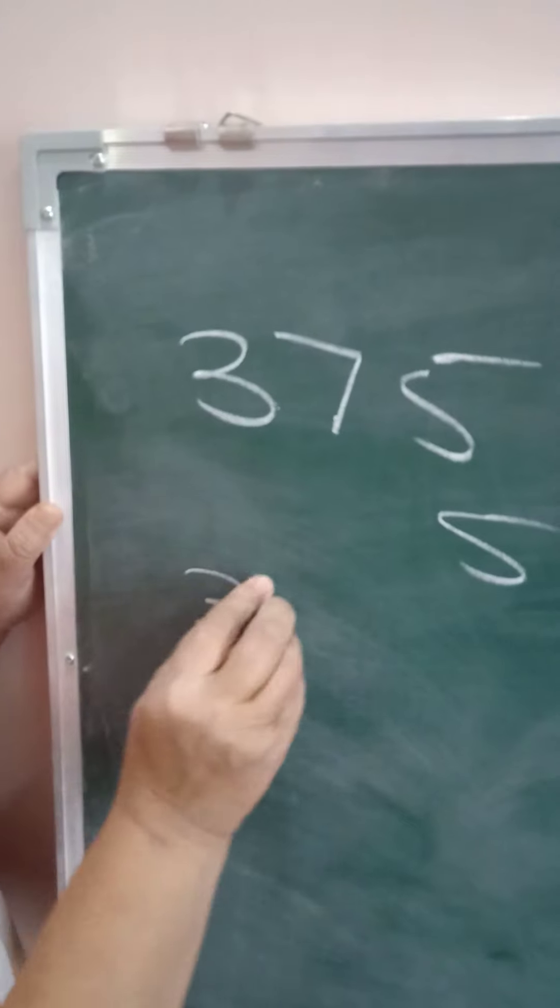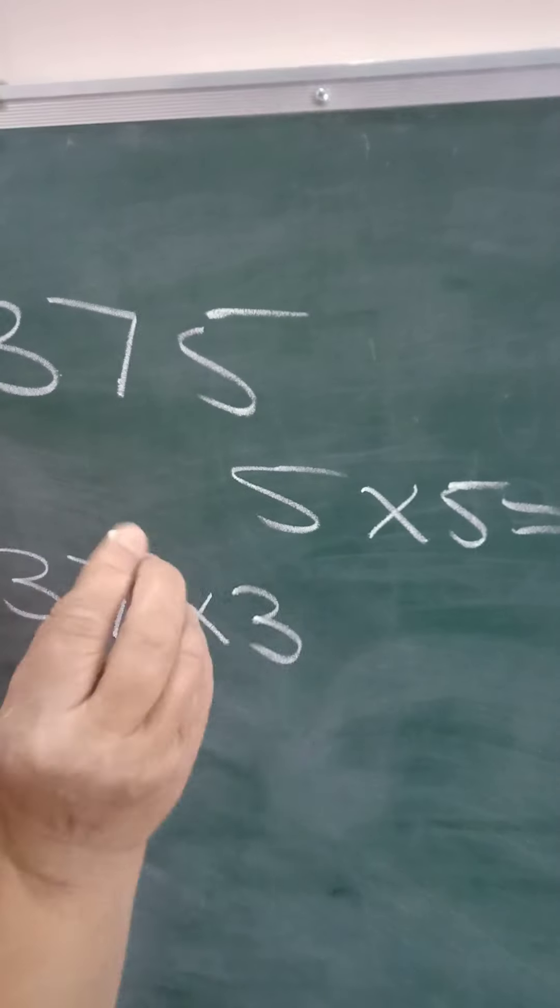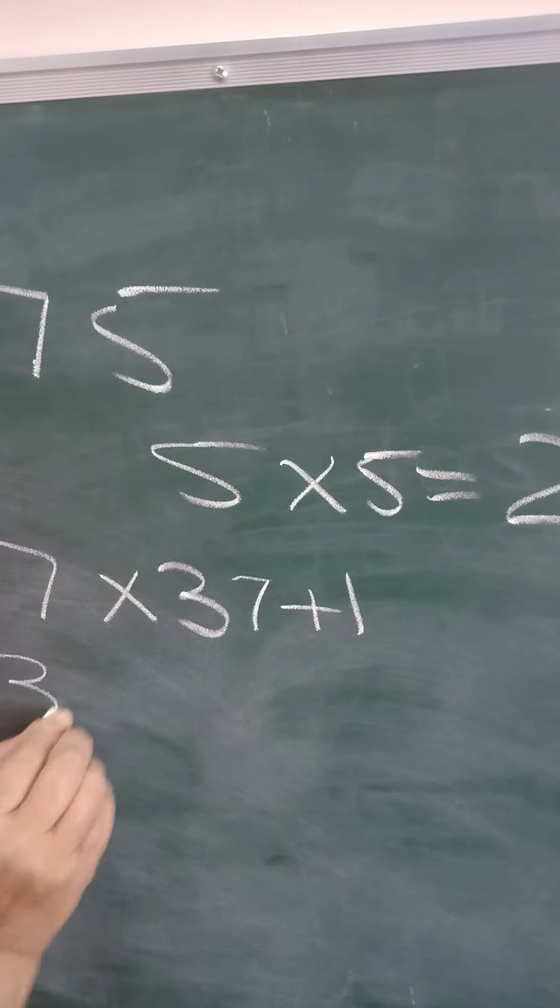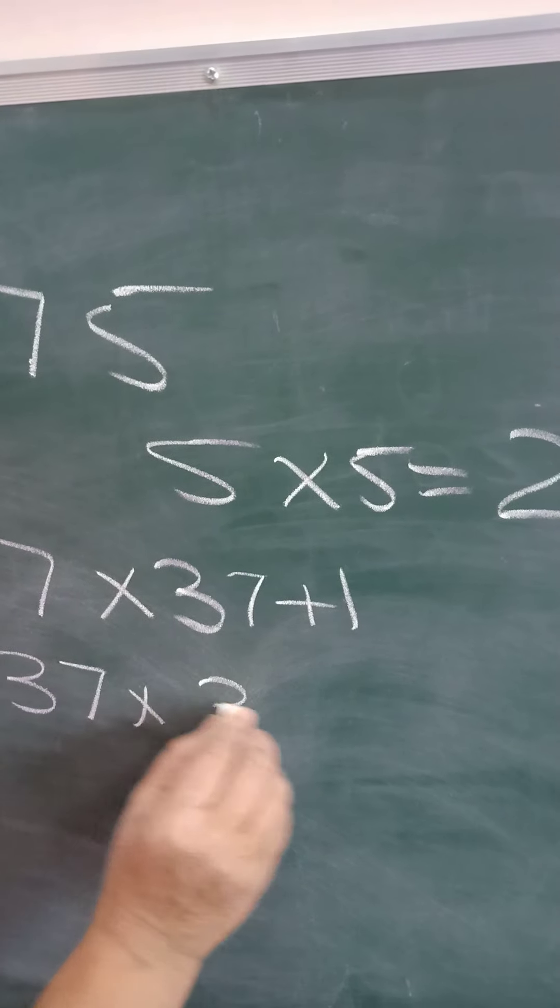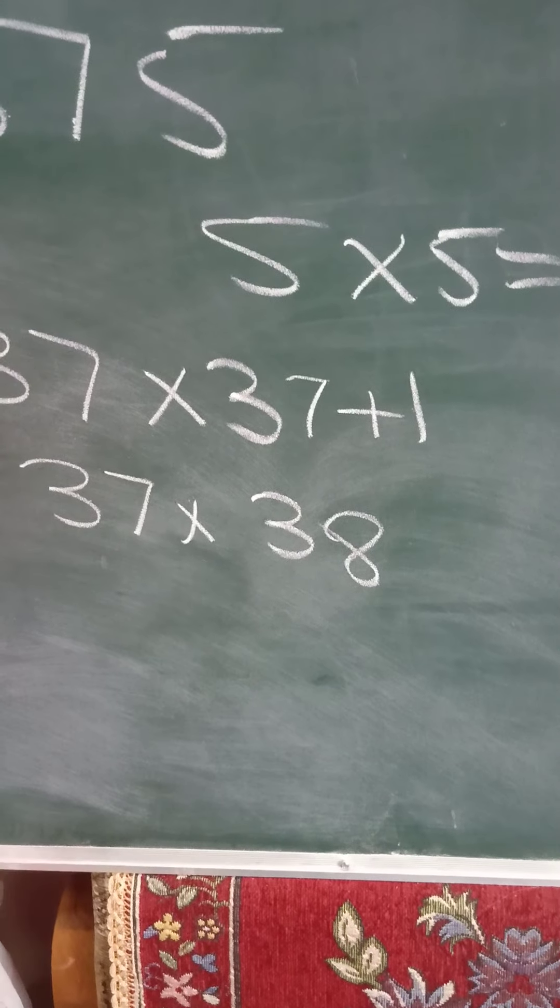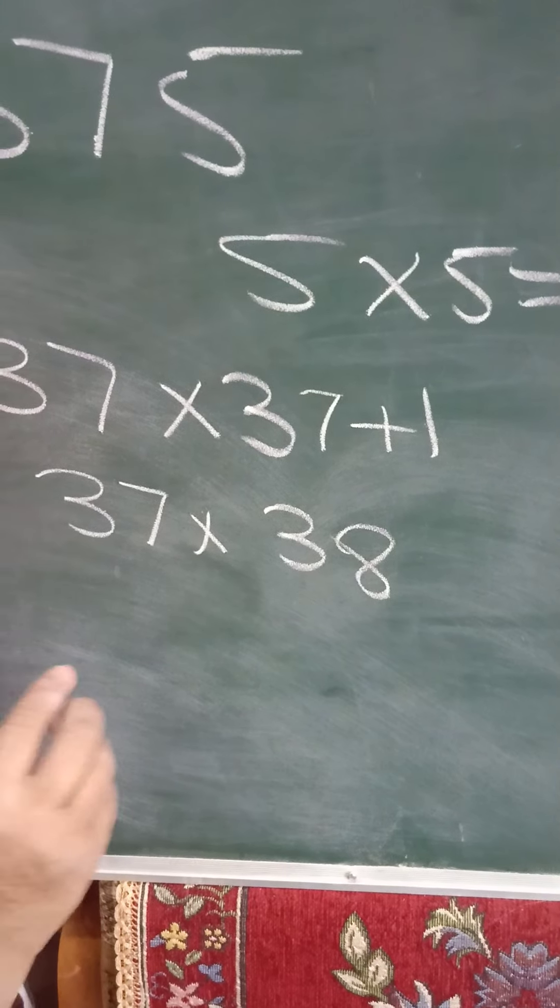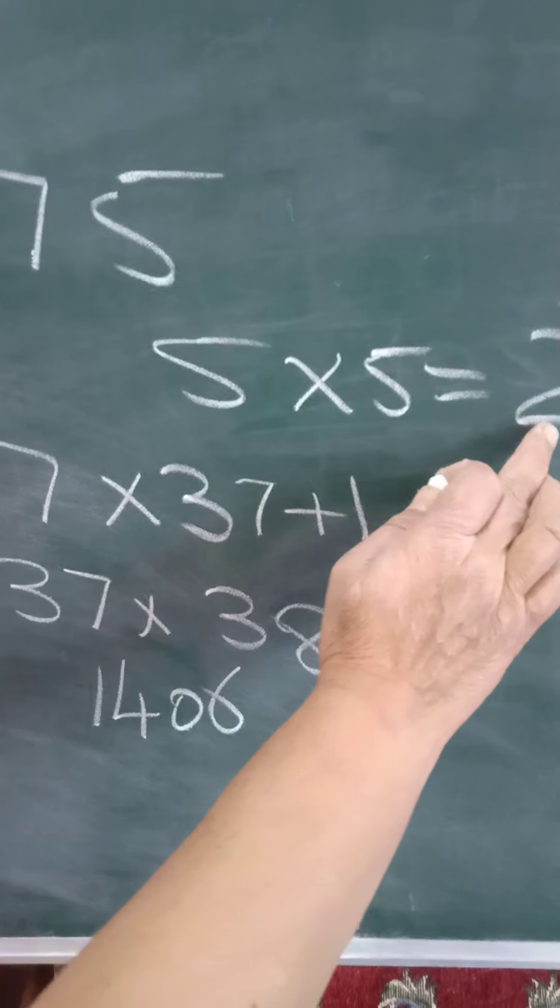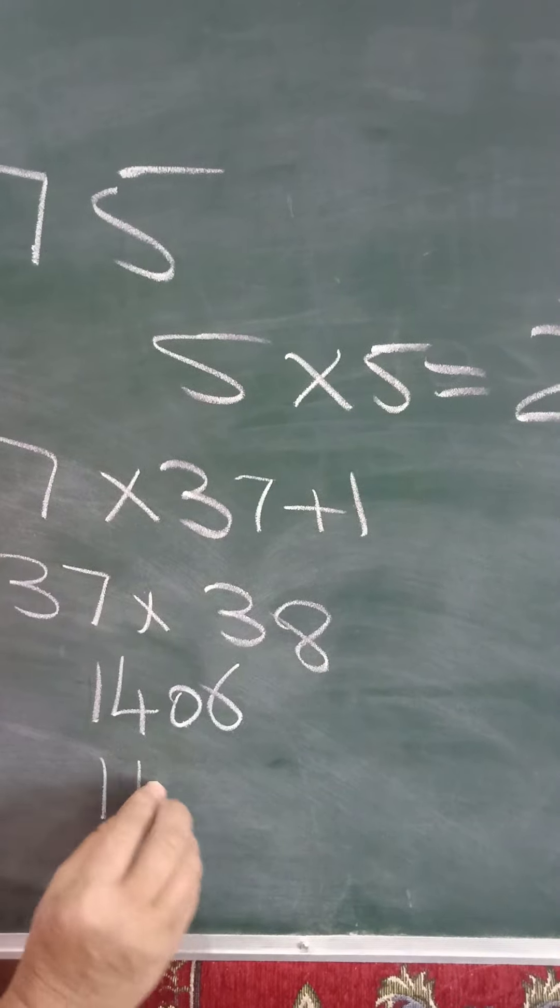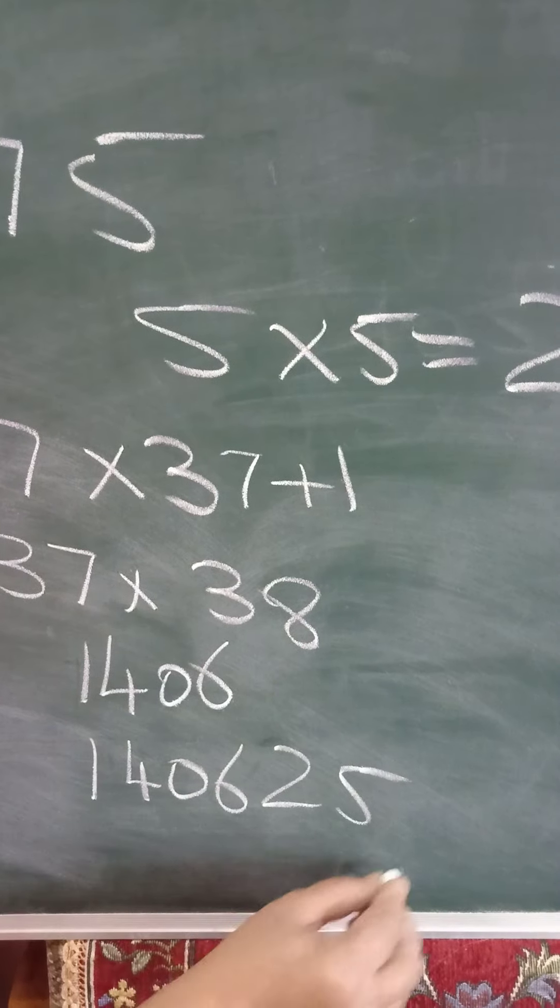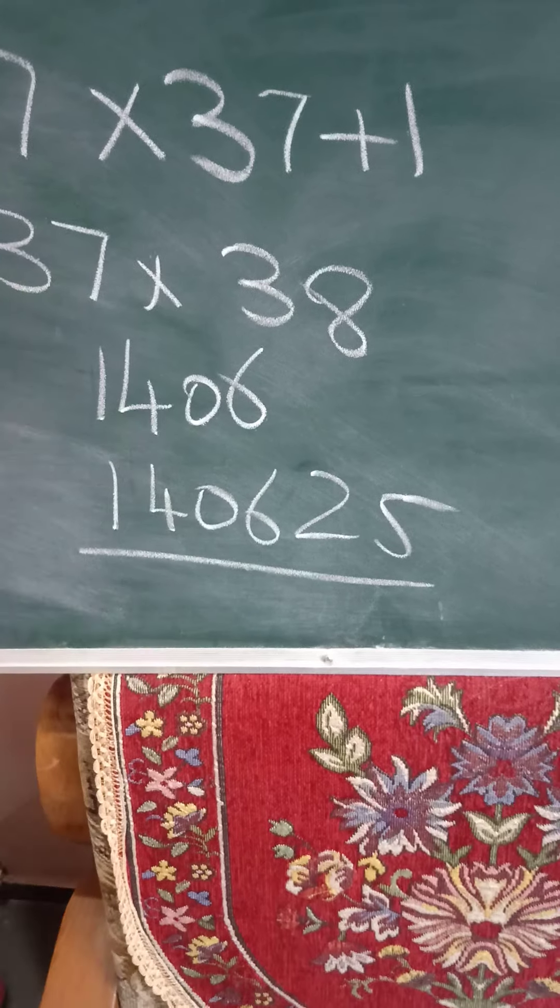Now see, 37 multiplied by 37 plus 1. That is 37 multiplied by 38. This easily you can do 37 multiplied by 38 is 1406. And then put this 25, 140625. So 140625 is the answer.